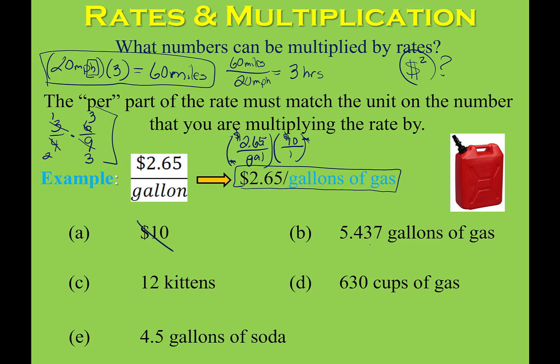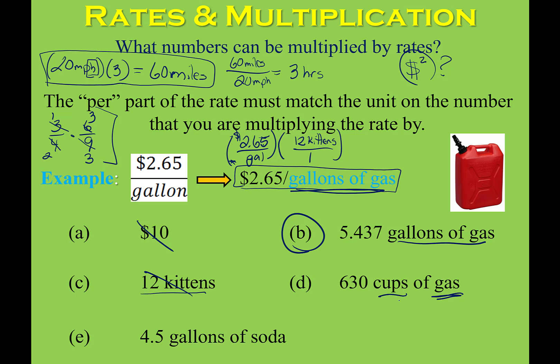Could we multiply dollars per gallon by 5.437 gallons of gas? Yes, because that unit matches. Could we multiply by 12 kittens? No — you'd have dollars times kittens in the numerator, and a dollar-kitten makes no sense. Units matter. If we had cups of gas, those don't match gallons. And gallons of soda wouldn't work either because the price is per gallon of gas, not soda. The only one that works is gallons of gas — that's the only multiplication that gives a sensible answer.